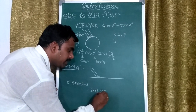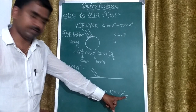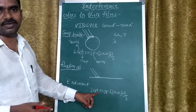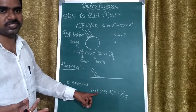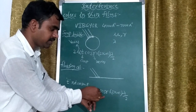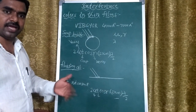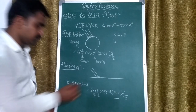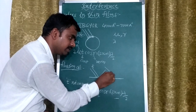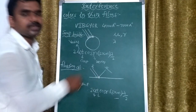The path difference formula is 2μt cos r = (2n+1)λ/2. Different colors have different wavelengths. For the floating oil film, the refractive index μ varies and the thickness t is not constant, because the oil may not be uniformly distributed. So whenever μ and t vary, even if r is constant, the path difference is affected. If a particular point satisfies constructive interference for red color, we observe red there, while that same point satisfies destructive interference for all remaining colors.